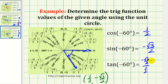If we multiply both the top and bottom by two, all the twos simplify out, leaving us with negative square root three over one, or just negative square root three. As you can see, the unit circle is very convenient for determining the sine and cosine function values of angles that have nice reference angles.